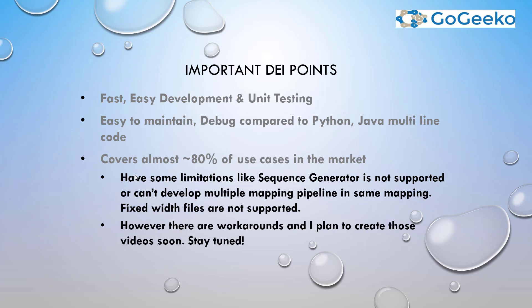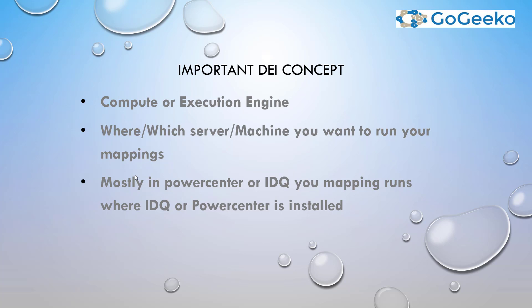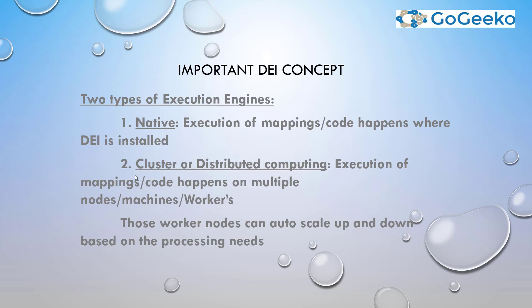The most important concept about DEI is the compute execution engine — this is where you want to run your mappings. Whenever we talk about running a mapping, some compute, machine, or server is involved, and that is what the execution engine is. In PowerCenter and IDQ, your mapping runs where IDQ or PowerCenter is installed, and that is called native execution, because your mapping logic runs on the same machine where it's installed.